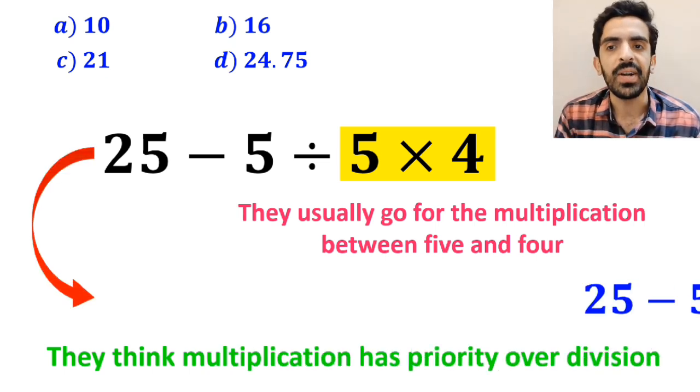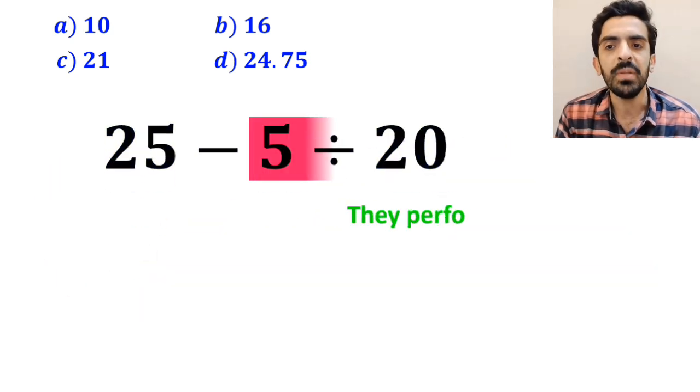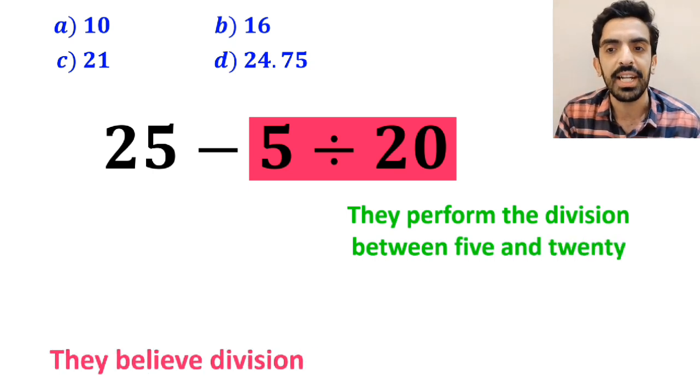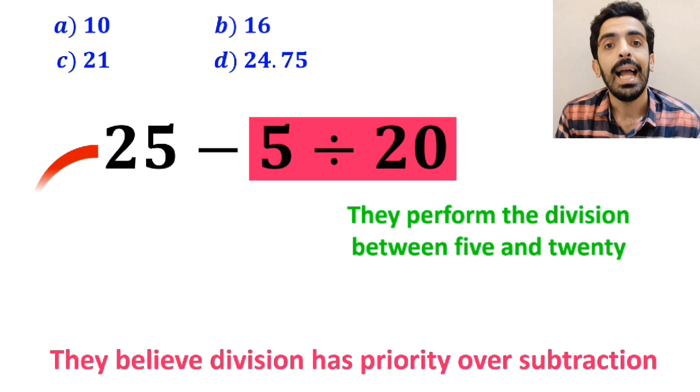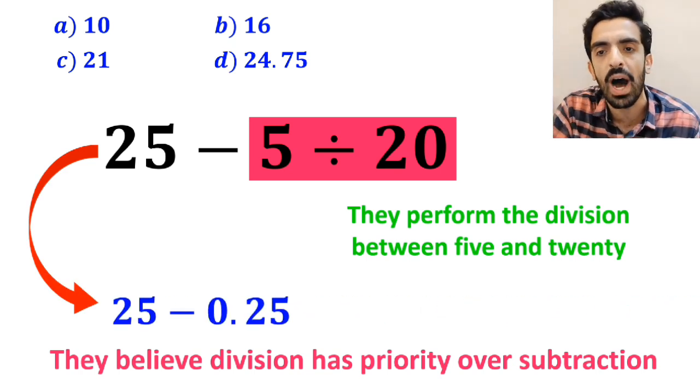So they rewrite this expression as 25 minus 5 divided by 20. Next they perform the division between 5 and 20 since they believe division has priority over subtraction and they rewrite this expression as 25 minus 0.25.